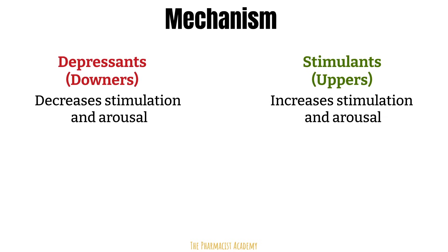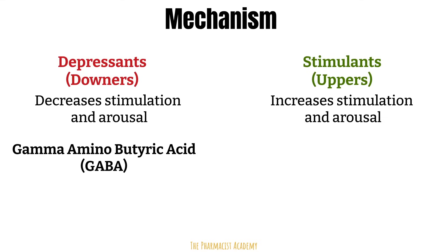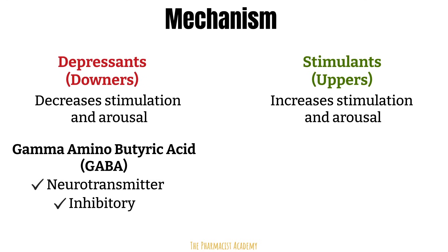In order for a substance to cause a depressant effect, they usually work on GABA. GABA stands for gamma-aminobutyric acid. GABA is a chemical messenger, also known as a neurotransmitter. When GABA binds to its receptor, the message it releases is an inhibitory message. This message will slow down how fast the cells send signals, leading to depressant effects.